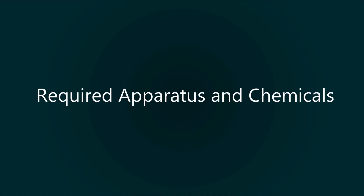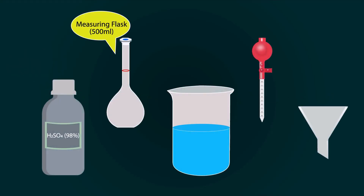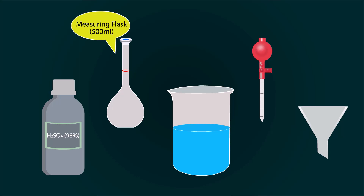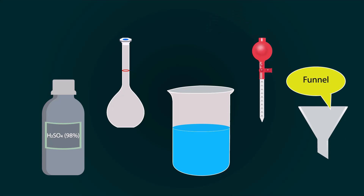Required apparatus and chemicals for this process are: 98% Sulfuric Acid, a volumetric flask of 500 ml, distilled water in a beaker, a pipette, and a funnel.